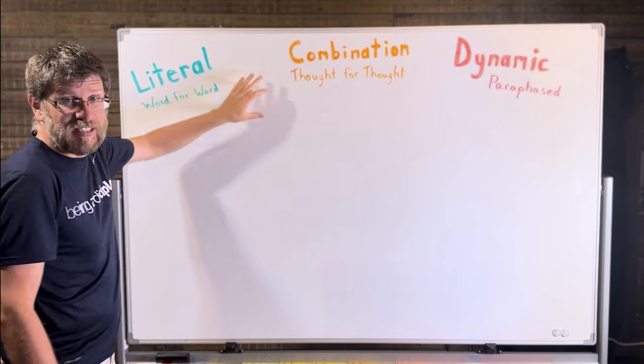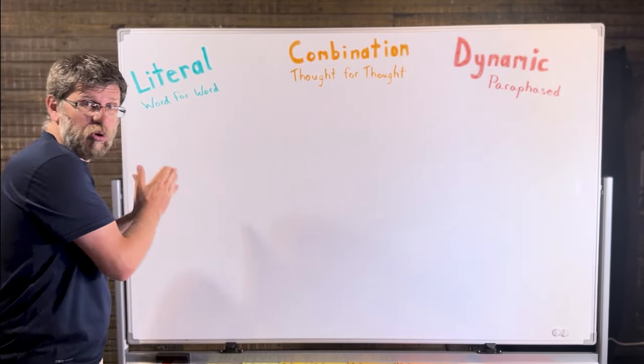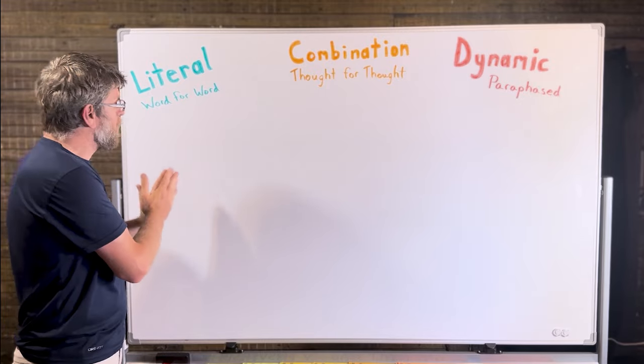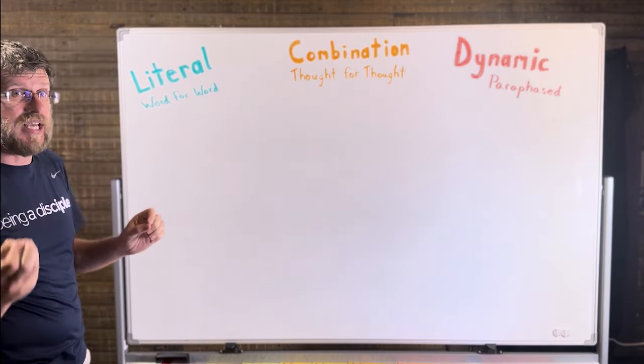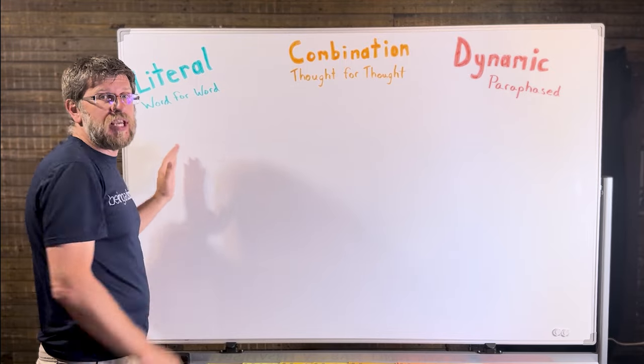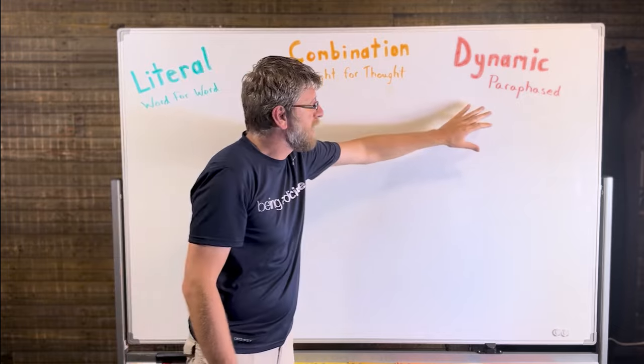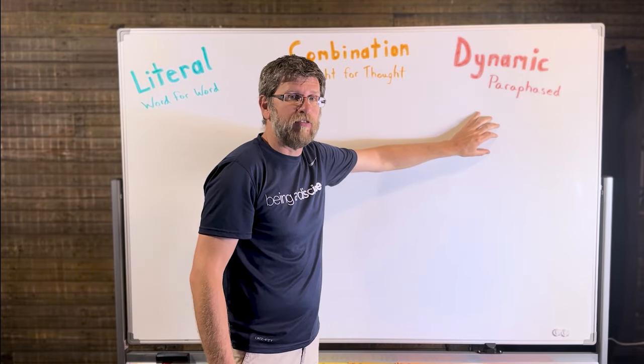Now, you can see that there are three different ways that translators can translate the Bible. The literal equivalency or the literal translation is trying to take word for word out of the ancient manuscripts and match it to a modern-day English word, but trying to stay as close as possible to what the ancient manuscripts say.